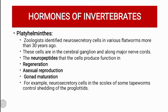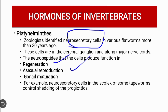In Platyhelminthes, more than 30 years ago, numerous neurosecretory cells were identified by zoologists. These are present in the cerebral ganglion and along the major nerve cords. These neuropeptides perform different functions: regeneration, involvement in asexual reproduction, and gonadal maturation.